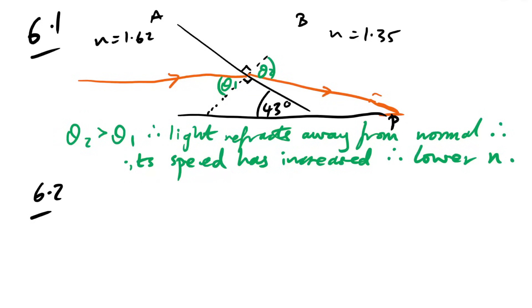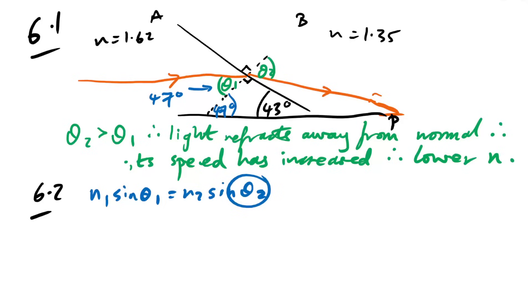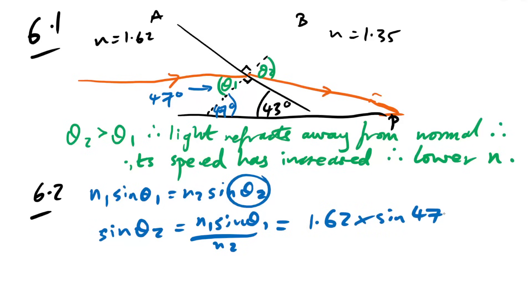Question 6.2: show that the angle of refraction is about 60°. If the angle marked is 43°, then θ₁ = 180 − 90 − 43 = 47°. Applying Snell's law: sin θ₂ = n₁ sin θ₁ / n₂ = 1.62 × sin47° / 1.35. Taking the inverse sine gives θ₂ ≈ 61.4°, confirming approximately 60°.